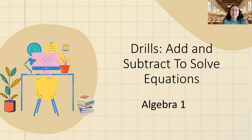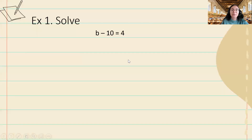Hi, welcome back to Math Specs. My name is Stephanie, and today we're going to use addition and subtraction to solve equations. For the first example, we have b minus 10 is equal to 4.